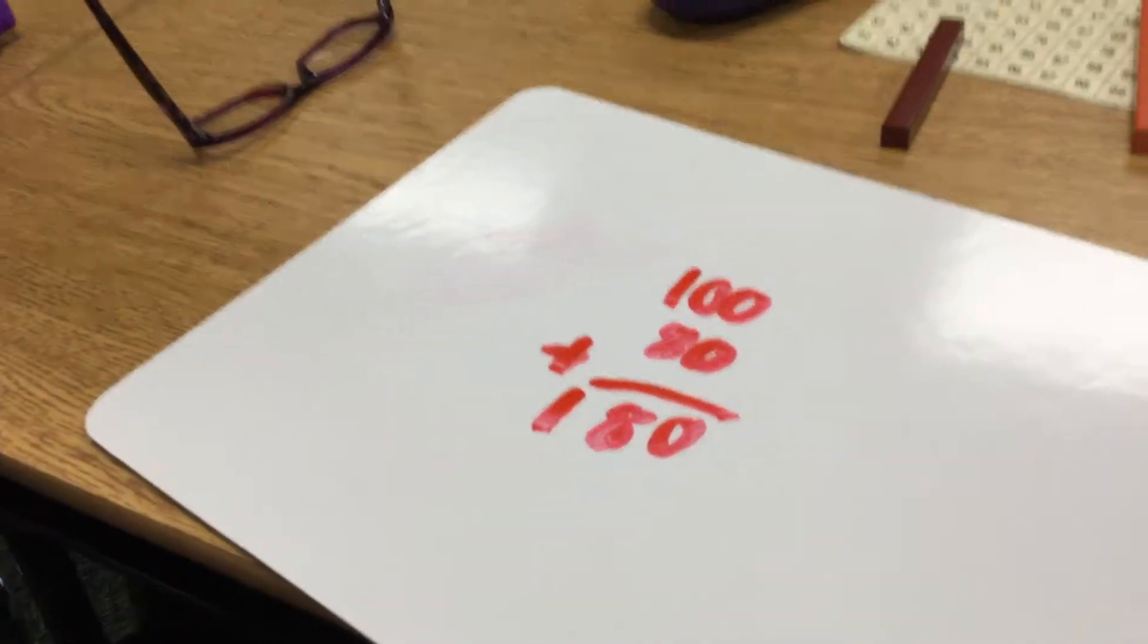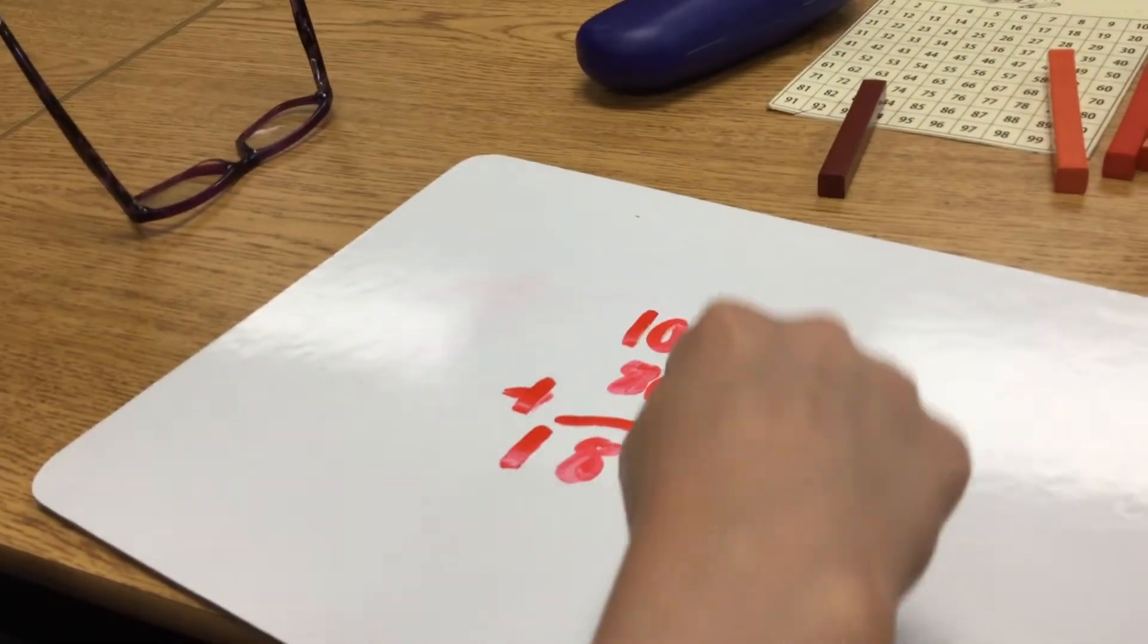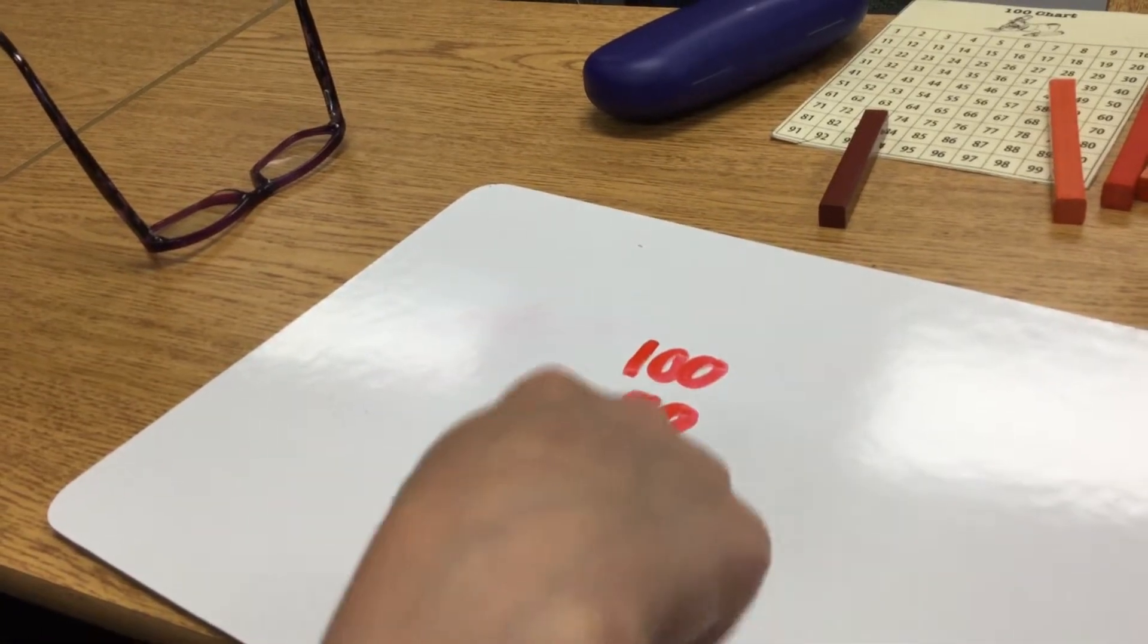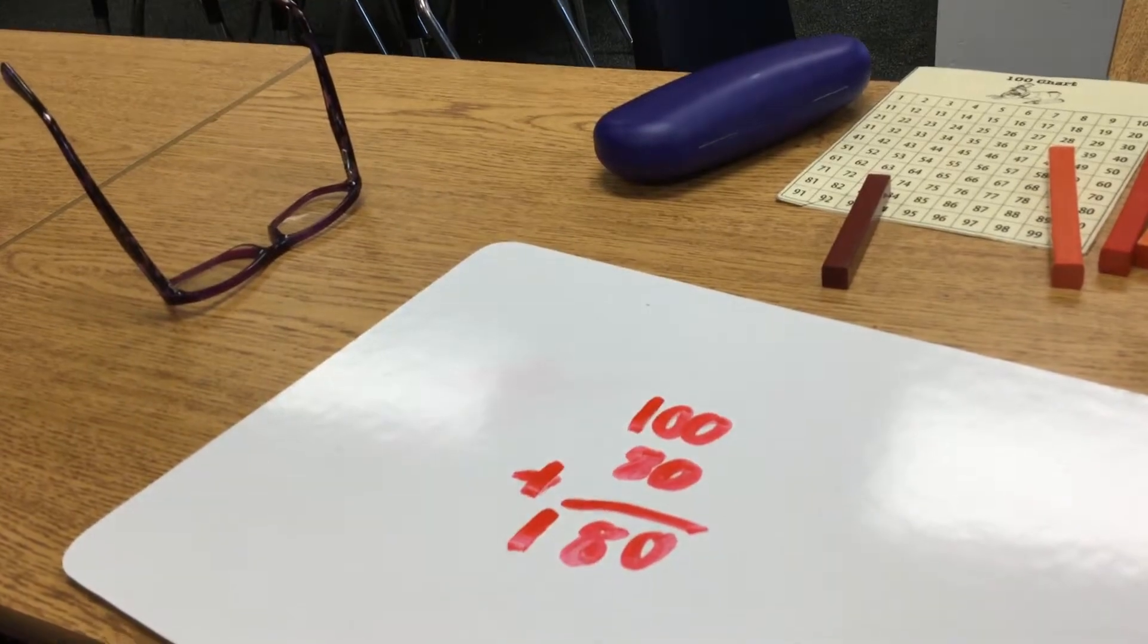100 what? 8. Is it 108? Because 0 plus 0 is 0, and 0 plus 8 is 8, and 1 and then that 1 that's left equals that.